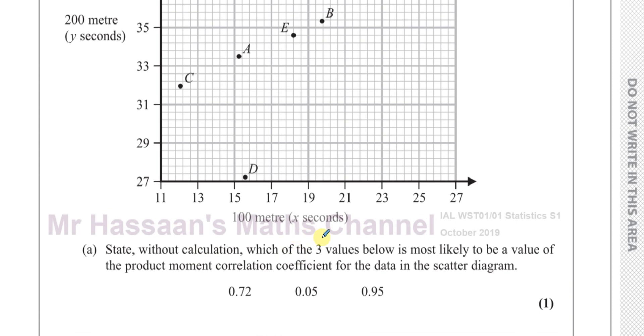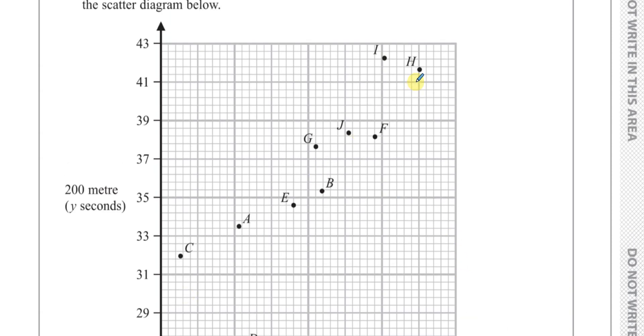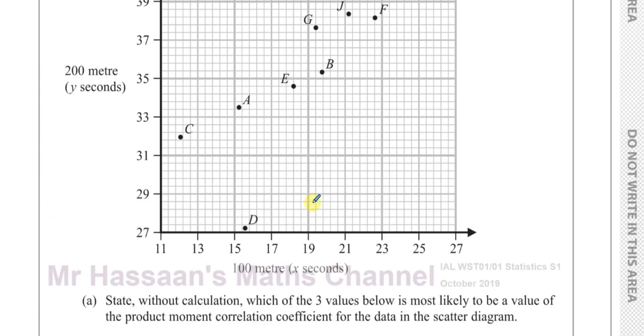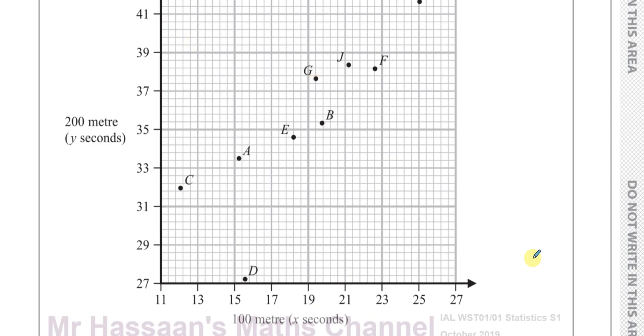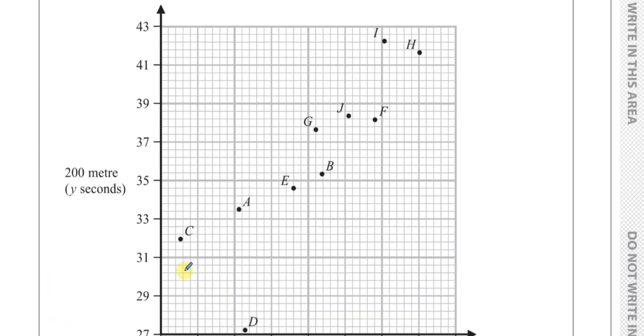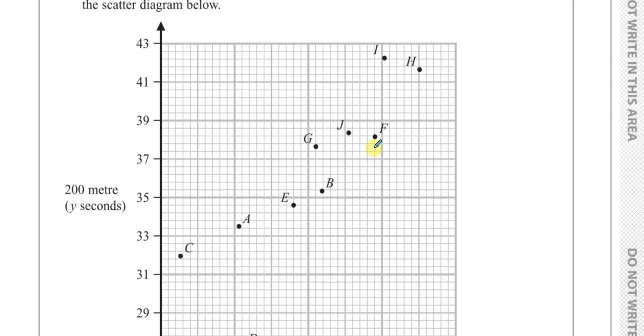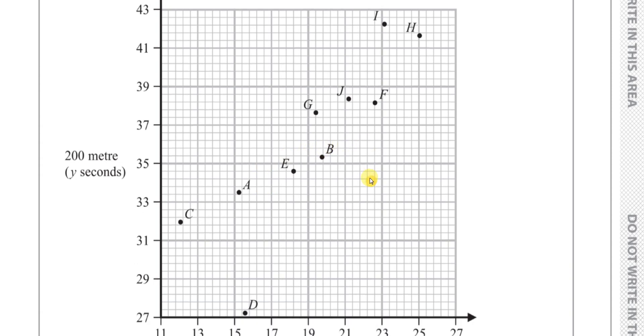It says, so this data without calculation, which of the three values below is most likely to be a value of the product moment correlation coefficient for the data in the scatter diagram. So the product moment correlation coefficient is given the symbol R and this basically is a numerical value which tells you how closely correlated or how close these points are to a straight line. The closer they are to a straight line, the closer the value of R is to 1 for positive correlation or minus 1 for negative correlation.